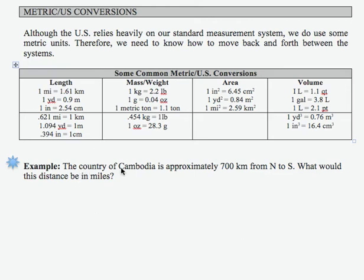In this example, I'm told that the country of Cambodia is approximately 700 kilometers from north to south. What would this distance be in terms of miles?